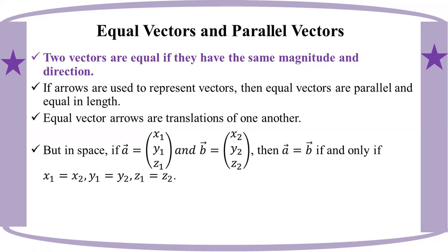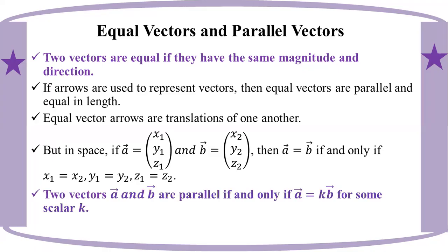Now let's see if we have parallel vectors. Parallel vectors: two vectors A and B are parallel if and only if vector A equals k times vector B, for some scalar k. Equal vectors A and B are also parallel.